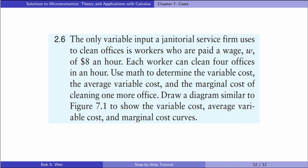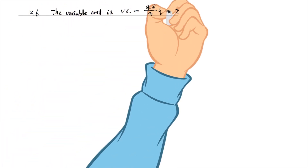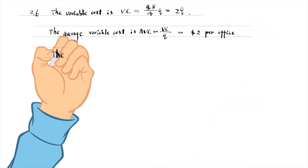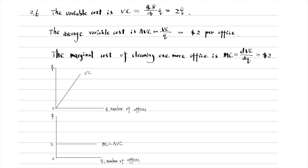Let's solve exercise 2.6. The only variable input a janitorial service firm uses to clean offices is workers who are paid a wage of $8 an hour. Each worker can clean 4 offices in an hour. The variable cost function equals 2 times Q, where Q is the number of offices. The average variable cost of cleaning one more office is also $2. The diagram shows the variable cost, average variable cost, and marginal cost curves.